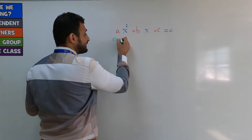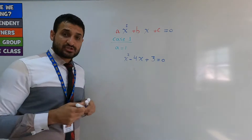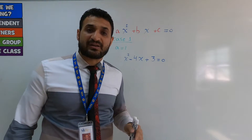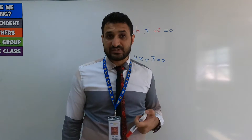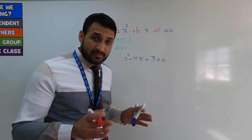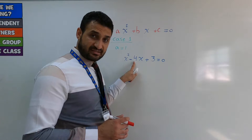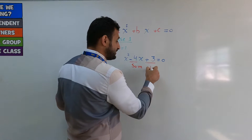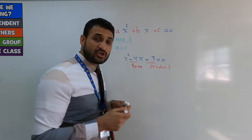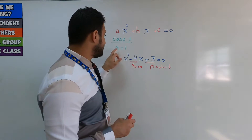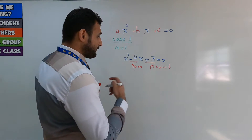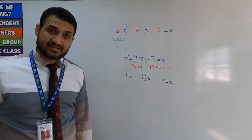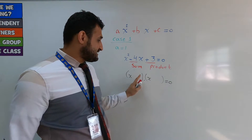Case 1: a equals 1. Here a is 1, b is negative 4, c is 3. When a equals 1, use the sum and product method. You look for two numbers that have a sum of b (which is negative 4) and a product of c (which is 3). Open two brackets, put x in each, equals zero.